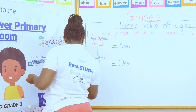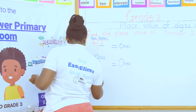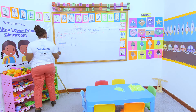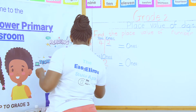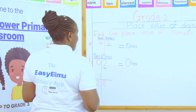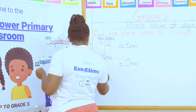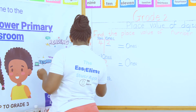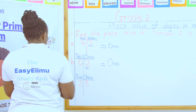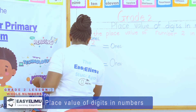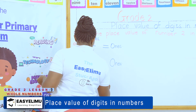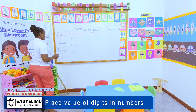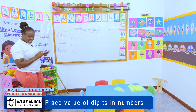They have given you the number 28 — find the place value of number two. Using the place value chart, give the position of each number. Eight is in the ones place value and two is in the tens place value. So what is the place value of number two? The place value of number two is tens.